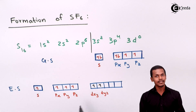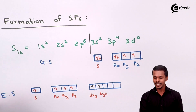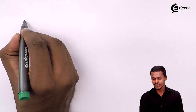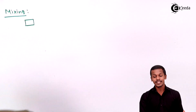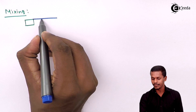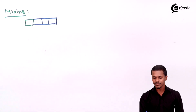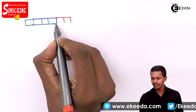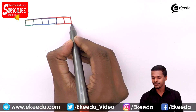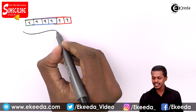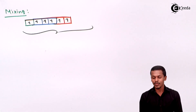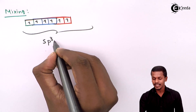These orbitals are now mixed together. The mixing of atomic orbitals involves one s orbital, three p orbitals, and two d orbitals. After filling, we get six hybrid orbitals with one electron each. This mixing process is what we call SP3D2 hybridization.